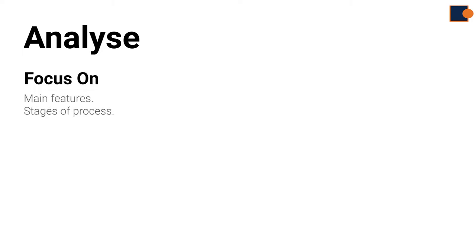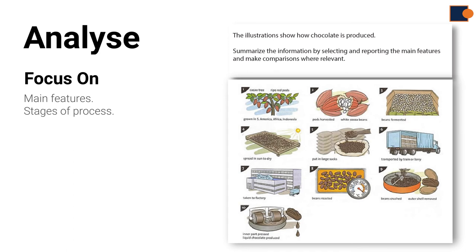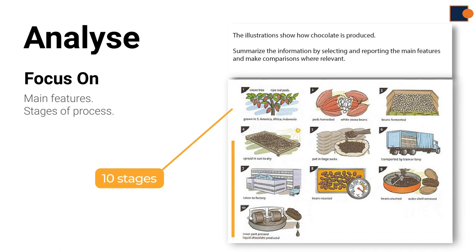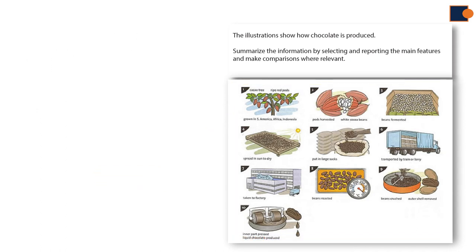Part one: Introduction. To write the introduction, first you should analyze the rubric and the illustration itself. To do this effectively, you must only focus on the main features or steps in the process. Here in the example, the main features are the process of chocolate production. It seems there is a mixture of man-made and natural processes involved, and there are overall 10 stages.